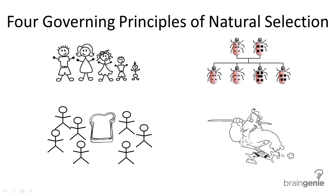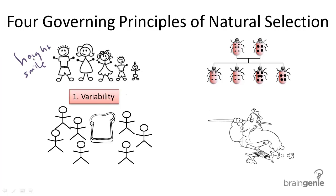The first principle of natural selection is variations. Variations, or variability, is the idea that there are innate differences in organisms. Look at your family or your classmates — each person has distinguishable characteristics, observable and unobservable, like traits such as inheriting diseases, or hair color, or height, or smile, or neck length, or foot length, even personality. The list goes on and on. When you think of variability, think differences.